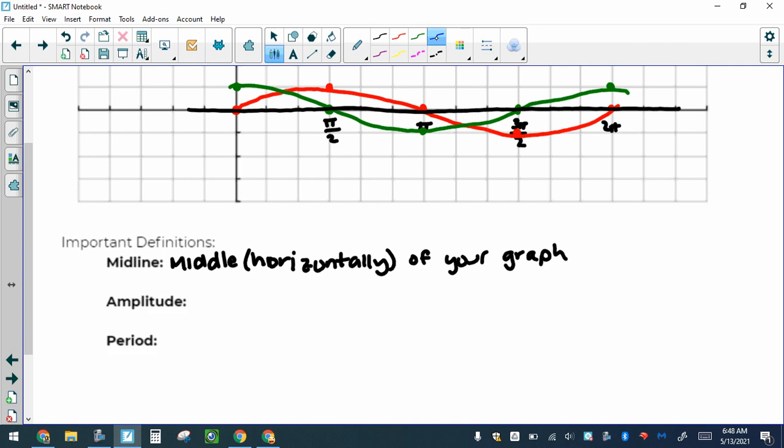The amplitude is how far off the midline. Usually that's just 1. If you see this black line as the midline here, the highest point for sine is 1 above or 1 below. So the amplitude is 1—the furthest away from the midline it gets is 1.